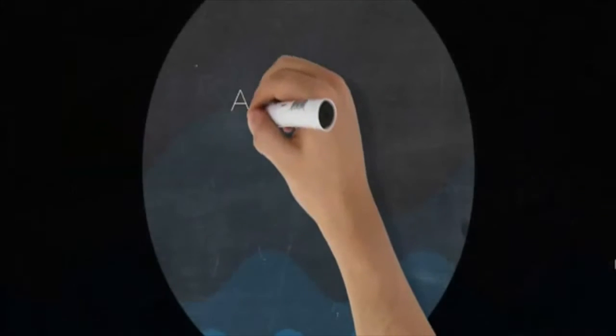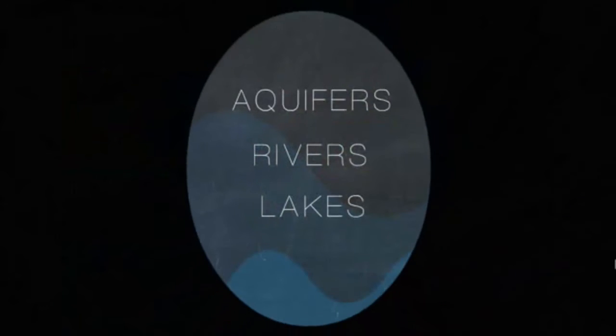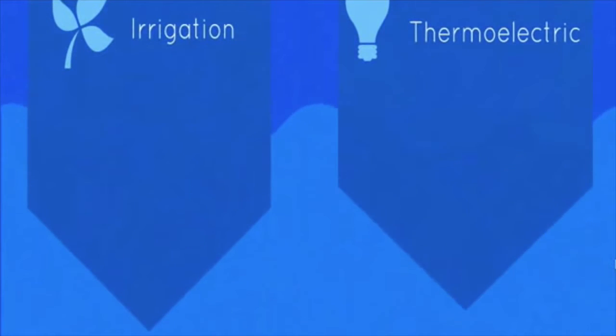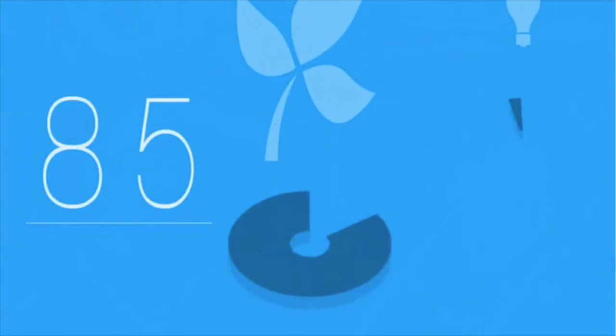People are now using more water. This leads to the depletion of aquifers, rivers, and lakes. Of all the water being used in the world, 41% is used for irrigation and 39% is being used for thermoelectric energy. However, of all the water being lost, 85% is due to irrigation.